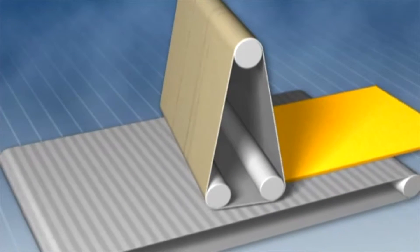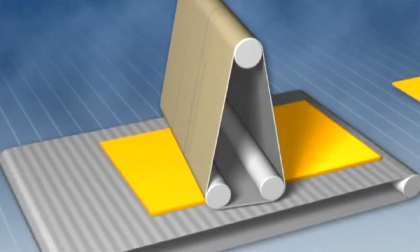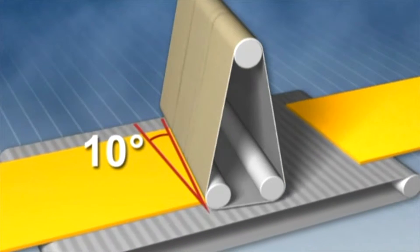The reason is that the sanding unit of the patented Kündig oblique sanding machines can pivot by 10 degrees.